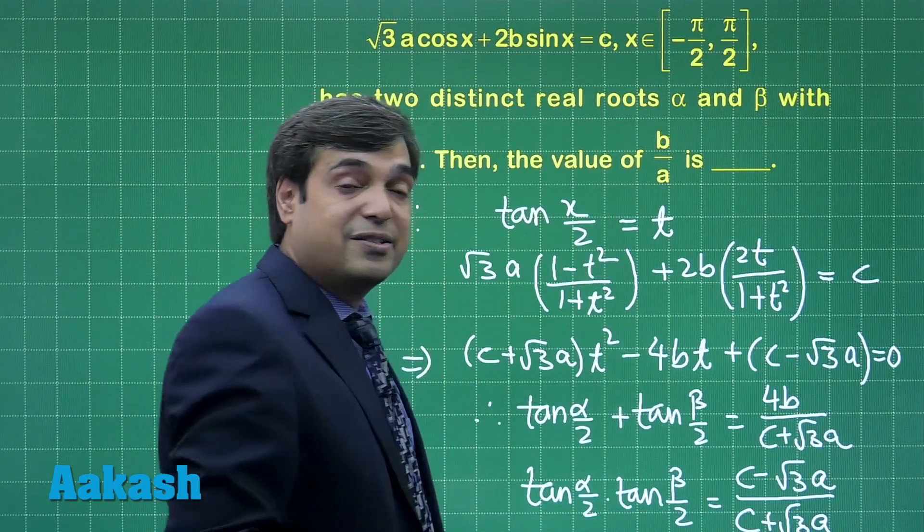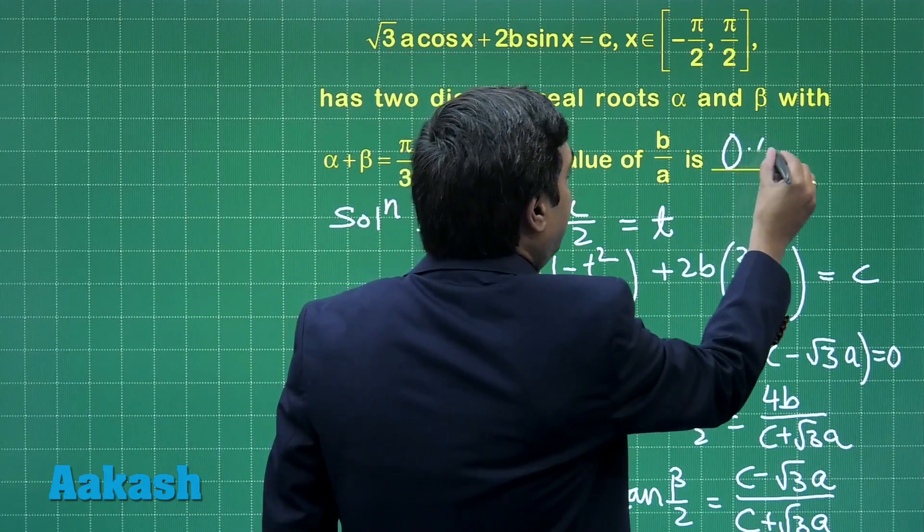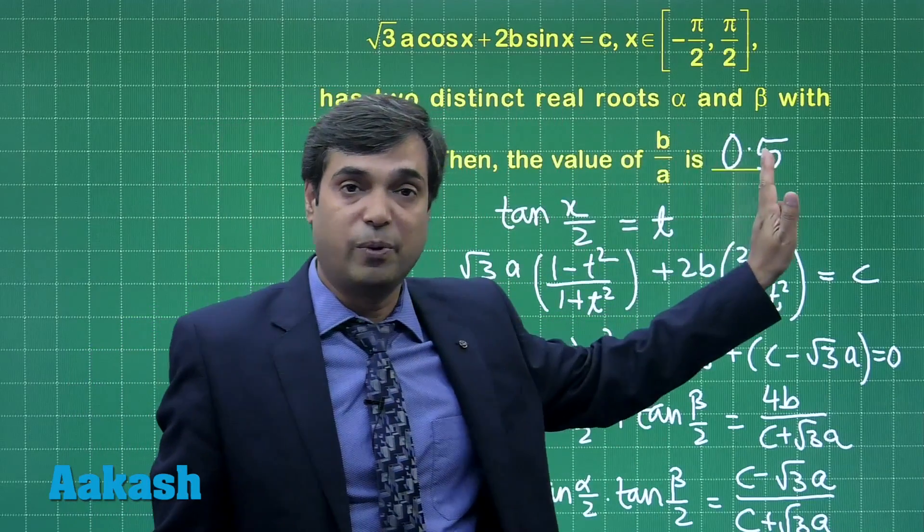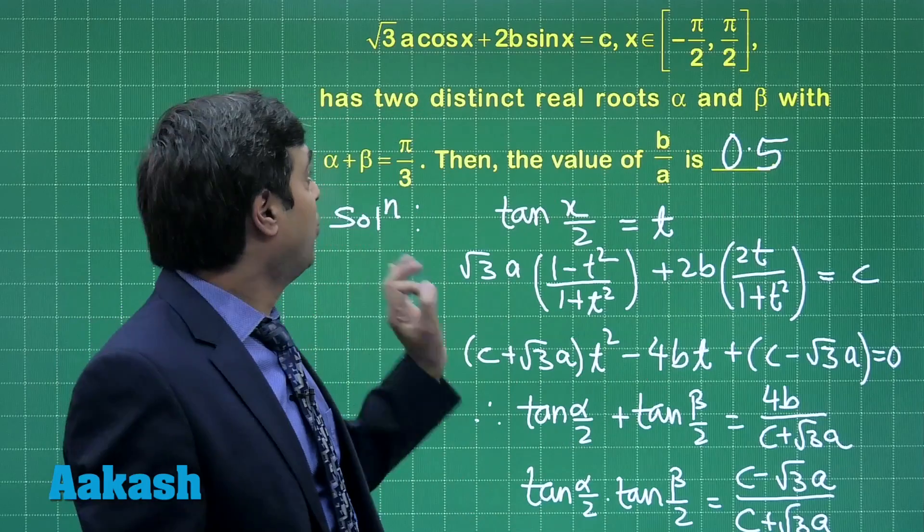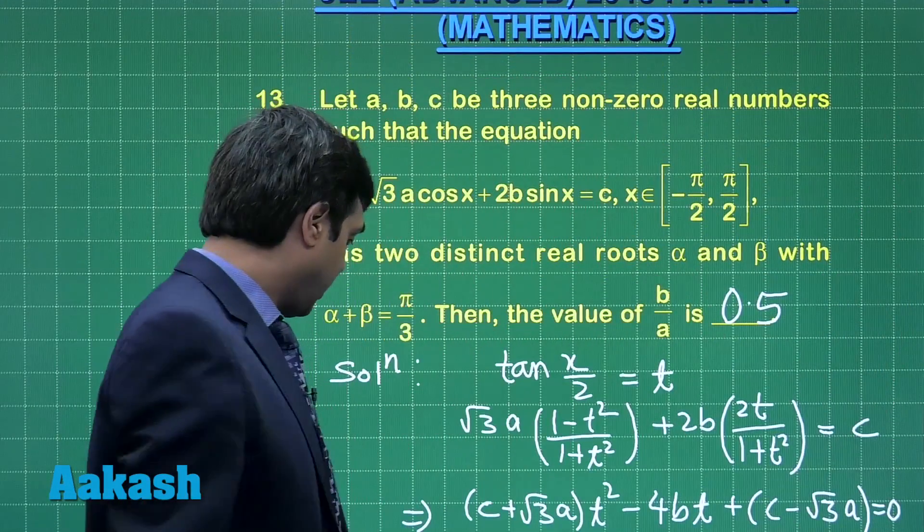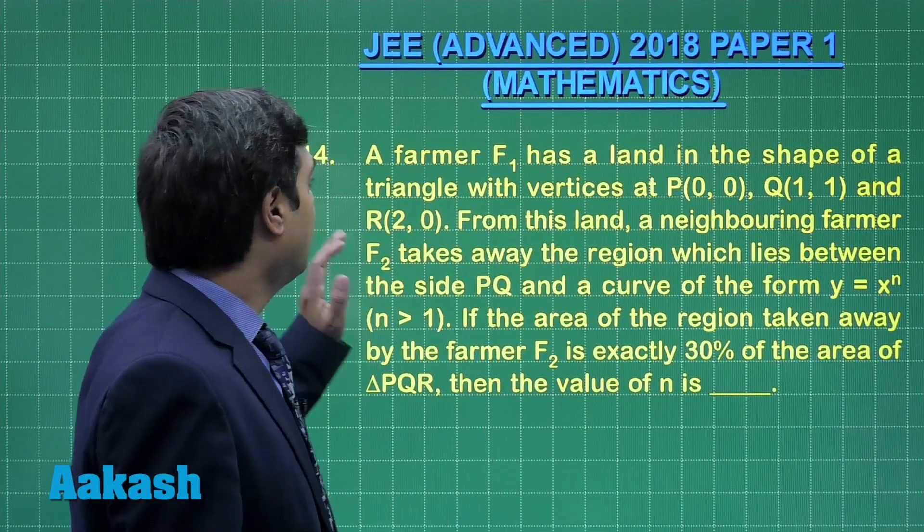We require the result in terms of a decimal number, that is 0.5 instead of the fractional value. Instead of 1/2, we need to write it as 0.5. So this is clear. Moving to the next question now, that is question number 14.